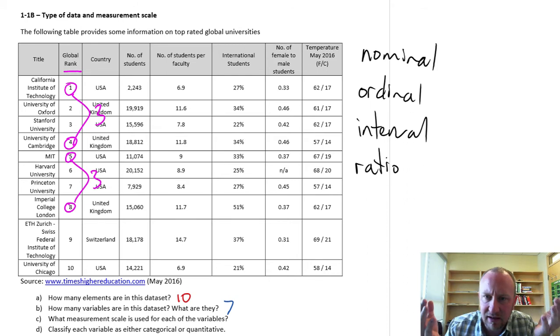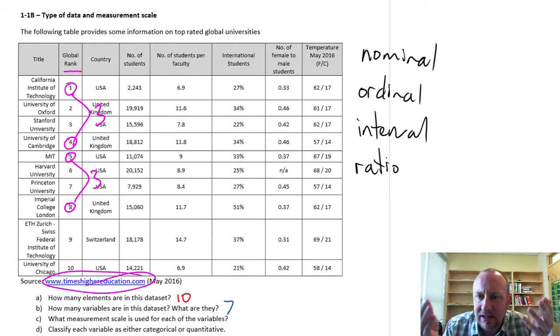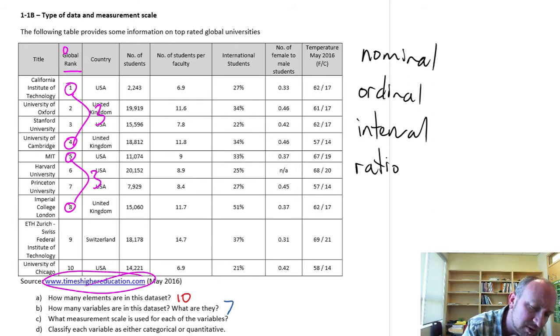All I can say is that California Institute of Technology is better than Cambridge, which is better than MIT, which is better than Imperial College of London, all according to Times Higher Education. So that interval really doesn't have any significant meaning. So this first variable is going to be ordinal.